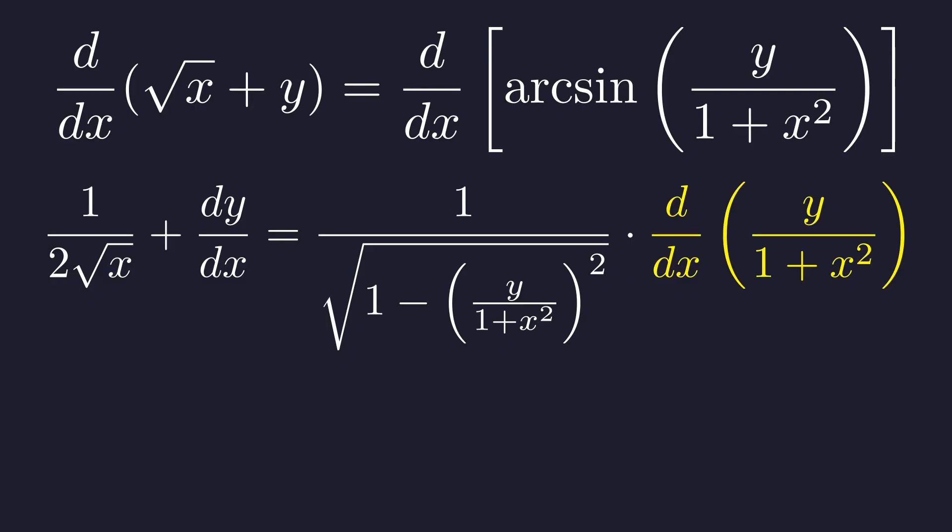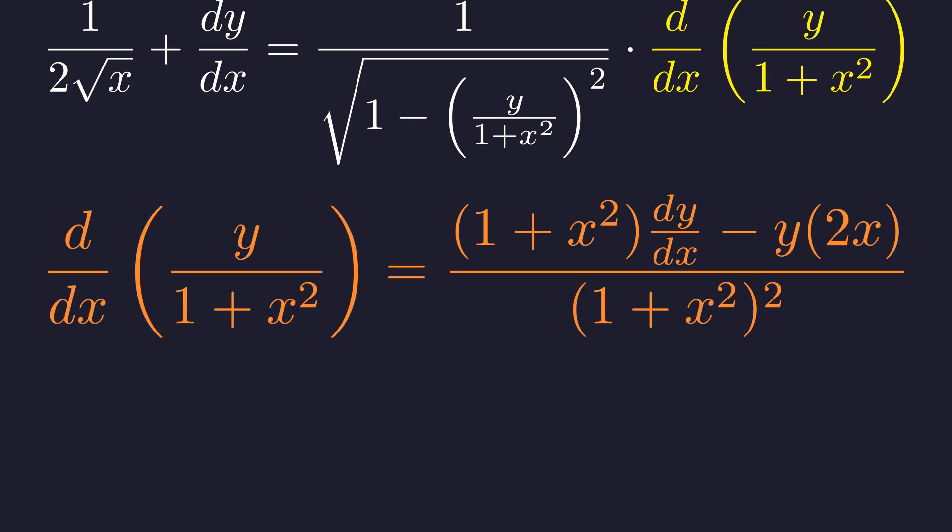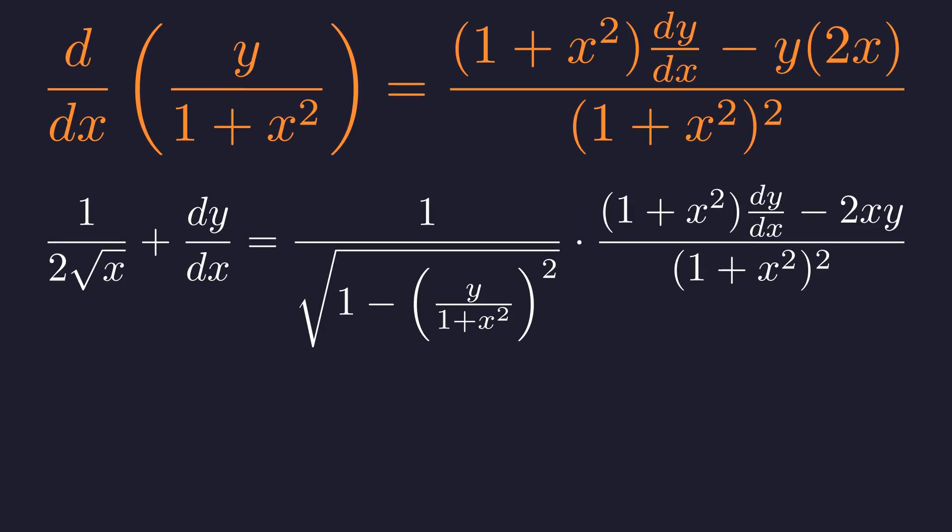Now we must calculate the derivative of the inner function u using the quotient rule. The quotient rule gives us the bottom times the derivative of the top minus the top times the derivative of the bottom, all over the bottom squared. Substituting this back gives us the full monstrous derivative.